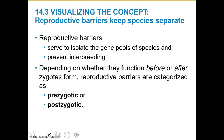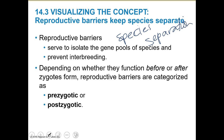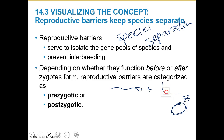There are some reproductive barriers that serve to isolate gene pools of species and prevent interbreeding, keeping species separate. These depend on whether they function before or after the zygote forms. We have egg and sperm; when they fuse together, that is the zygote. So we're talking about whether something happens before or after the egg and sperm meet — pre- and postzygotic.